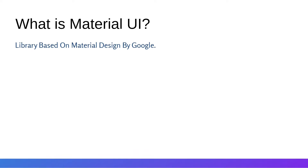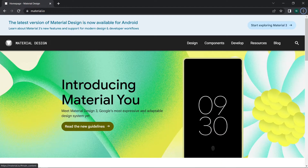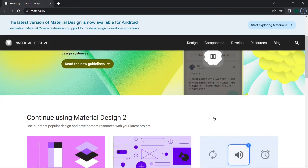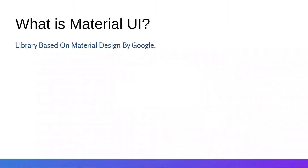Material UI is based on Material Design by Google. Material Design is the design system that Google uses to build the UI of the Android operating system. You can go to material.io to check it out — those are the designs Google uses for Android. Material UI also provides more features for web-based development on top of Material Design.